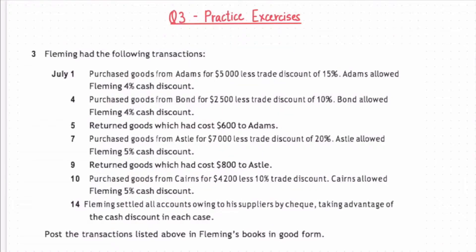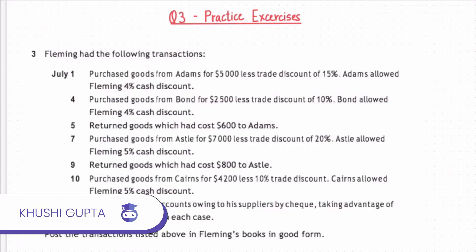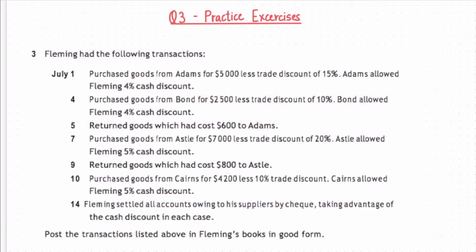Now we will do an exercise — Question 3 from the practice exercises. Fleming had the following transactions. On July 1st, he purchased goods from Adams for $5,000 less a trade discount of 15%, followed by a 4% cash discount.